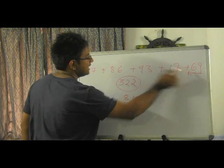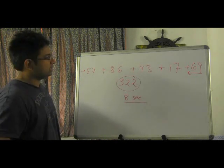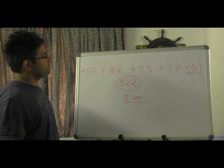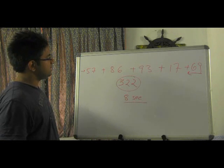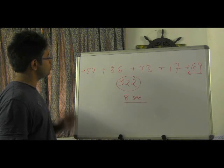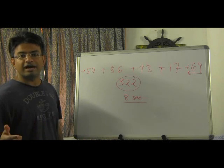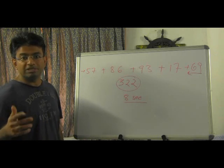Now like I told you, let me add them in reverse. I'll go from 69 all the way to 57 and I'll be thinking out aloud so try to hear what I'm saying. Okay, say start. 69, 71, 16, 86, 89, 179, 181, 185, 185, 165, 265, 262, 21, 22, 322.